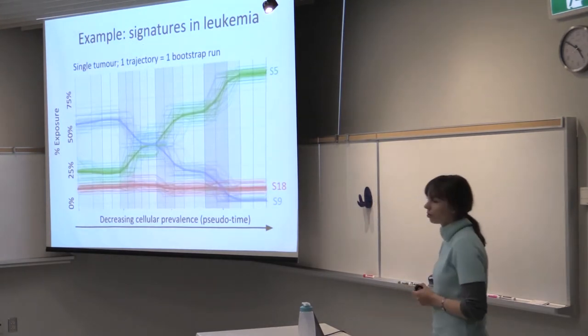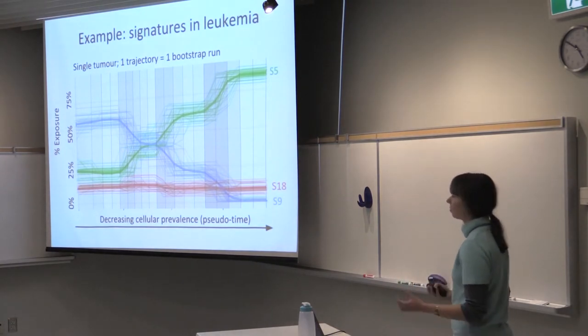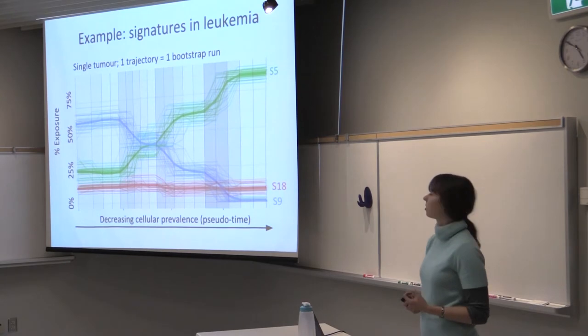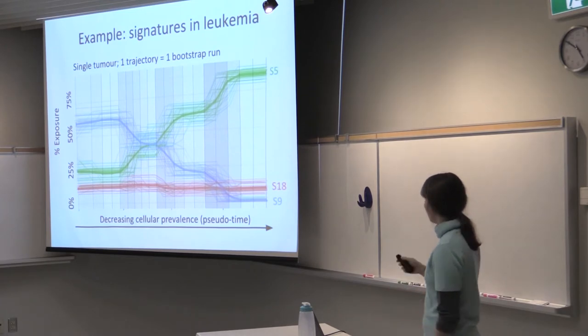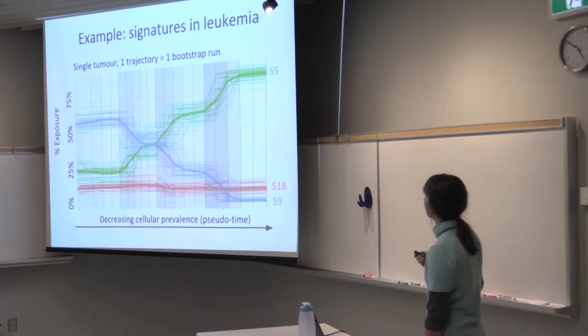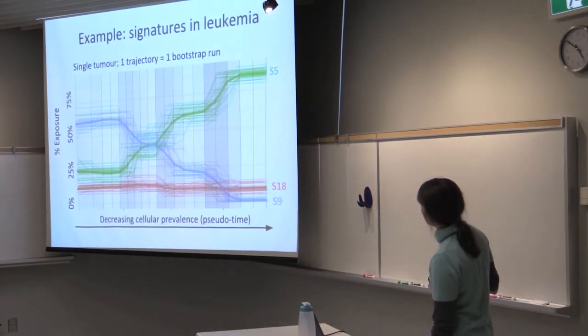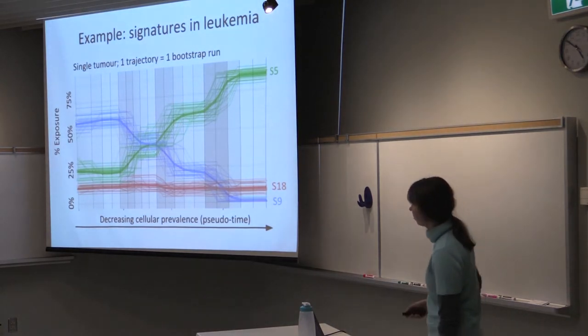And then we want to also assess the uncertainty of our signature trajectories. So we bootstrap the mutations several times and we run our trajectory estimation on each bootstrap. And here, every thin line is one bootstrap run, and the thick line is just the mean of those bootstrap runs. So the thing to notice here is that the change points are roughly at the same location, and also the discrepancy between different trajectories is quite small, and it's typically within 5%.